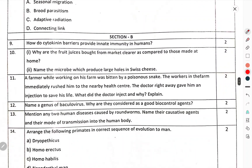Section B — Question 9: How do cytokine barriers provide innate immunity in humans? Why are few juices bought from the market clearer as compared to those made at home?